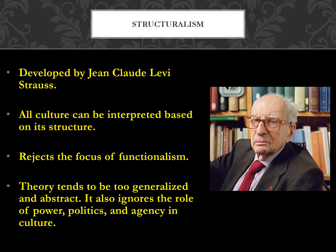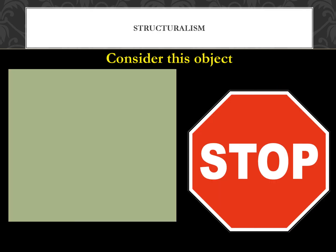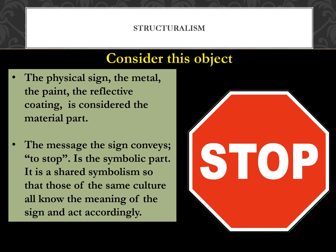Structuralism puts heavy focus on symbols. Consider a stop sign: the physical sign — the metal, paint, and reflective coating — is the material part, while the message it conveys to stop is the symbolic part. It is a shared symbolism so that all members of the same culture know the meaning of the sign and act accordingly. Structuralism looks at both the physical representation within the culture and the symbolic meaning behind that representation.